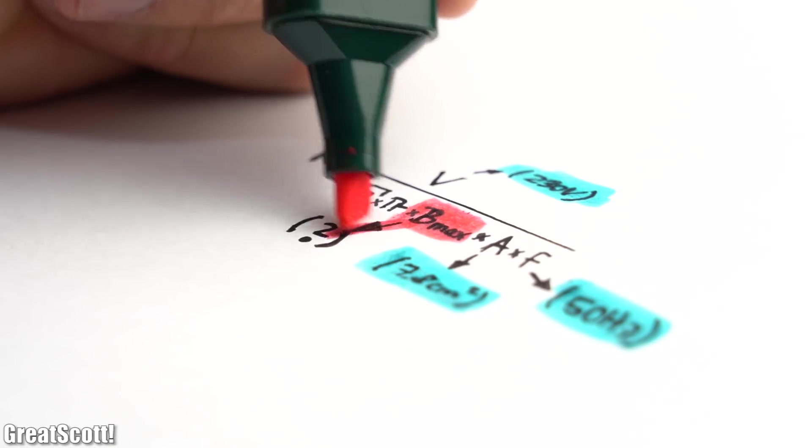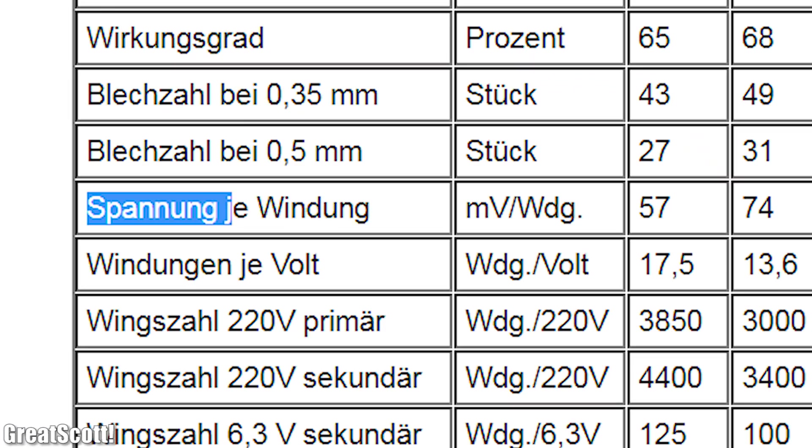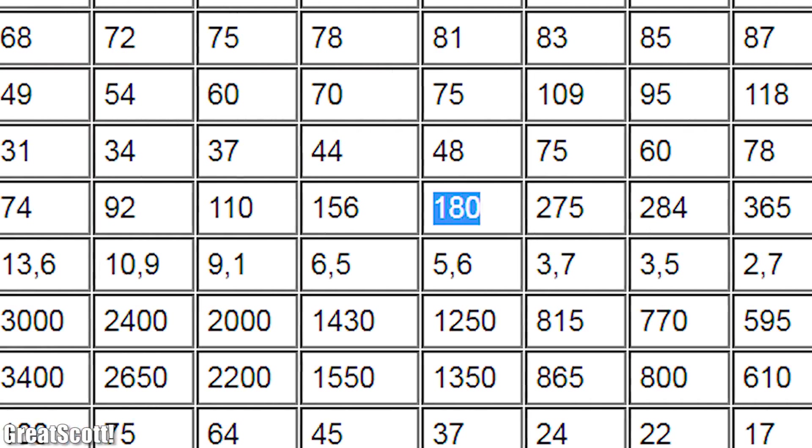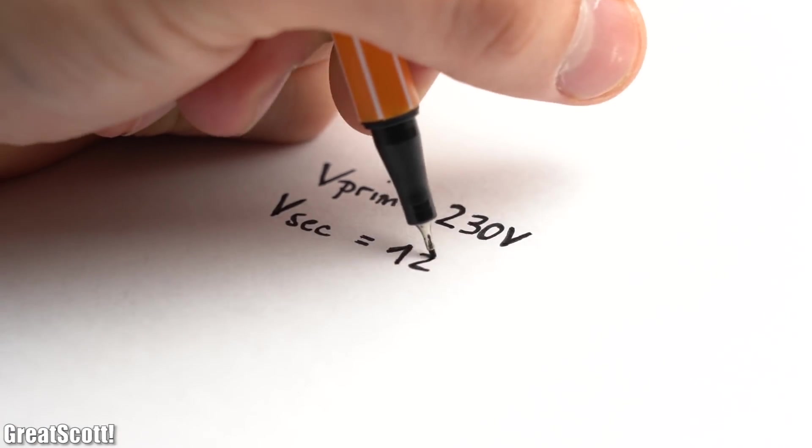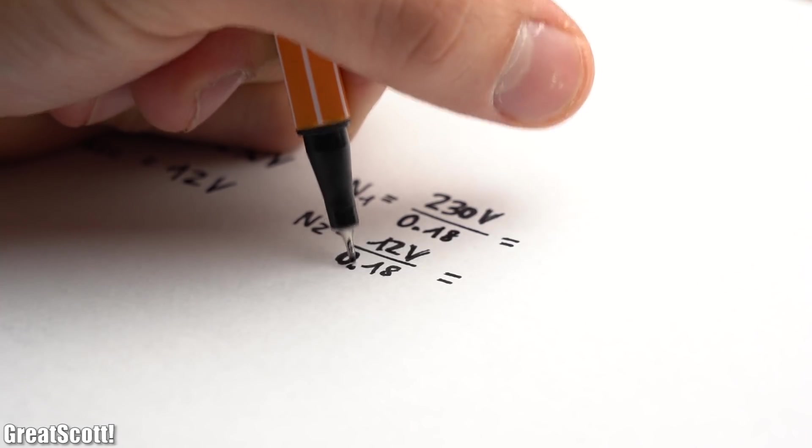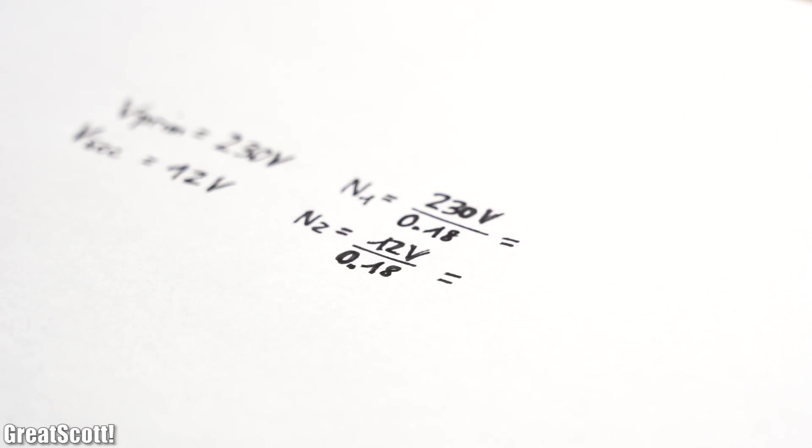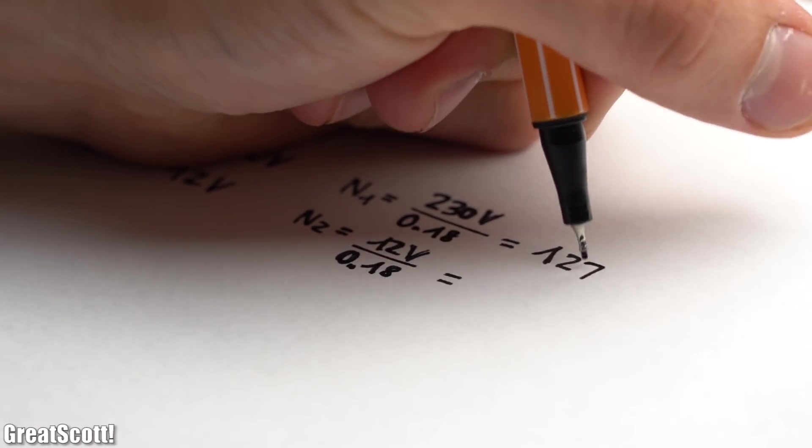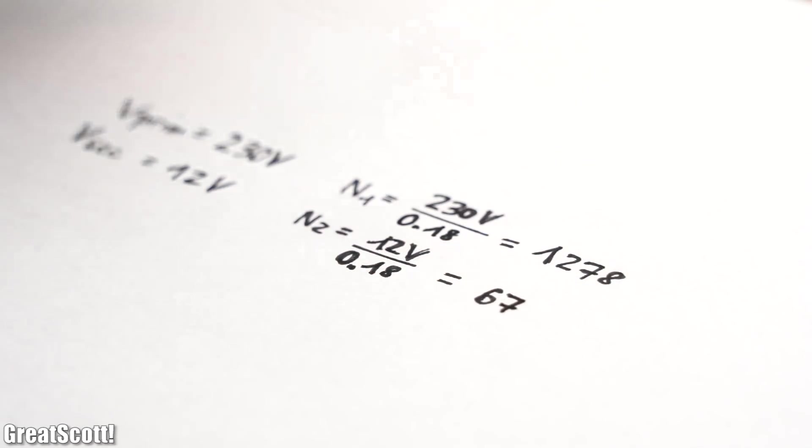But since the maximum flux density was missing and I didn't want to guess, I rather used the given voltage per winding value of 180 millivolts. Since we got 230 volts on the primary side and I want 12 volts on the secondary side, we simply have to divide the voltage by the voltage per winding value. And thus we get a primary winding of around 1278 turns and a secondary winding of around 67 turns.